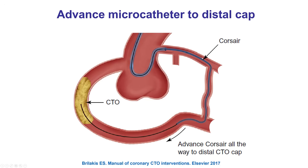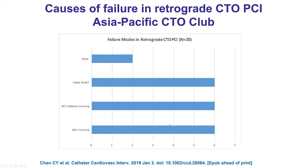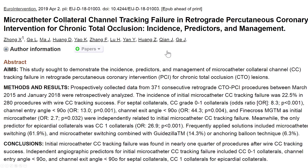How can the microcatheter be advanced into the distal true lumen? It's something that happens most of the time; however, there are cases in which microcatheter advancement fails. In the Asia-Pacific CTO club, failure of the microcatheter to cross the collateral happened in approximately 30% of retrograde failed cases. In another case series from China, 22.5% was the incidence of failure of the initial microcatheter to cross through a collateral channel, which was solved mainly by changing microcatheter, but also by getting more support, as we'll discuss in subsequent slides.